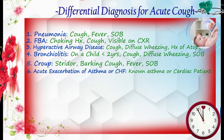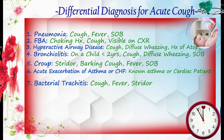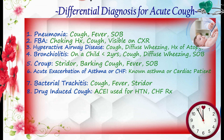Exacerbation of asthma and heart failure should also be ruled out. Bacterial tracheitis, tracheoesophageal fistula, or sometimes drug-induced cough — especially in children taking ACE inhibitors — should be considered. This is especially relevant for a child with heart failure or hypertension.